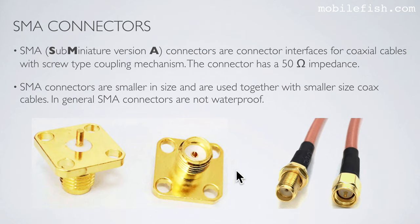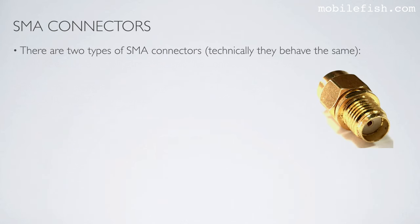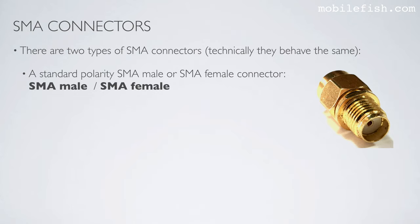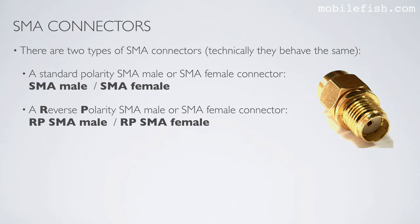These are SMA connectors. There are two types of SMA connectors; technically they behave the same. A standard polarity SMA male or SMA female connector, and a reverse polarity SMA male or SMA female connector, indicated by the letters RP in front of it — so RP SMA male or RP SMA female.